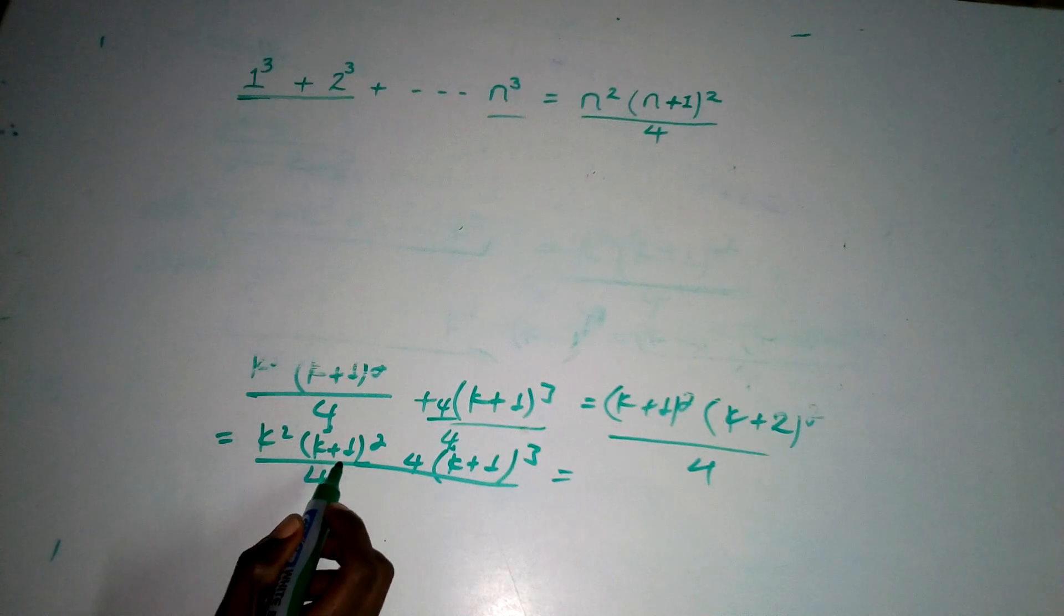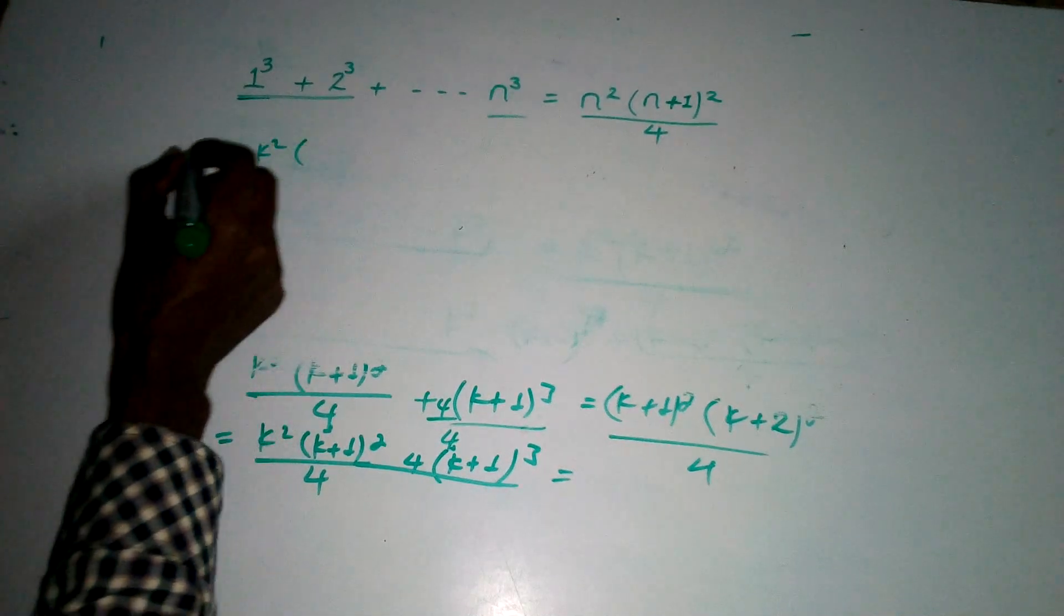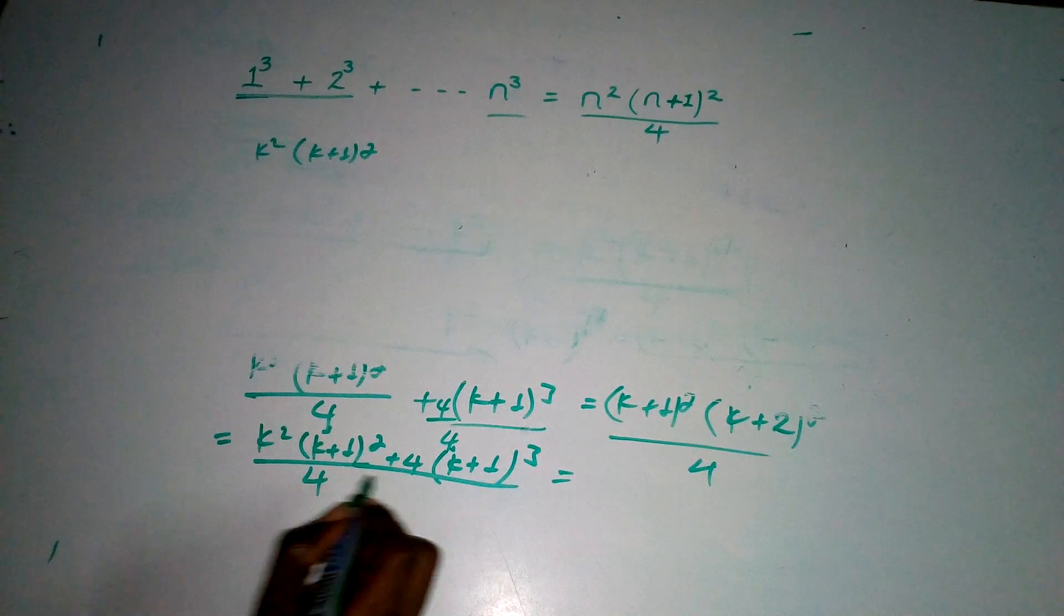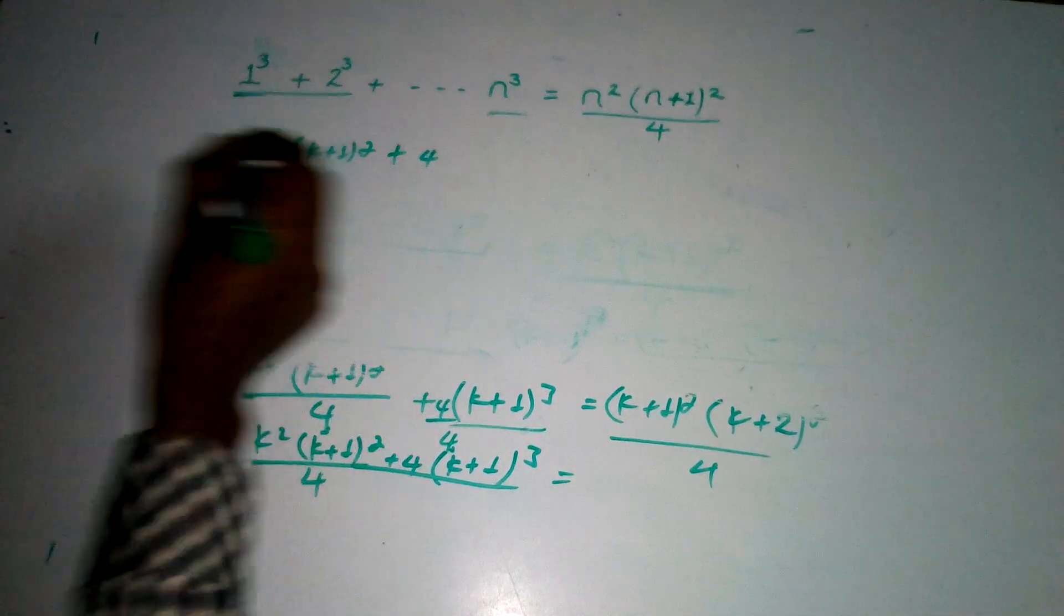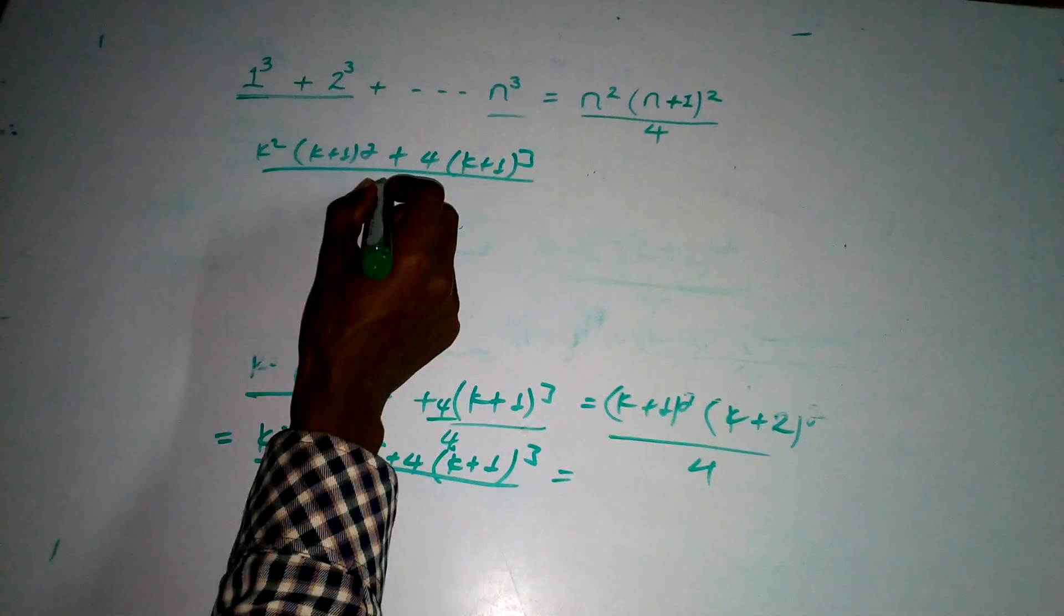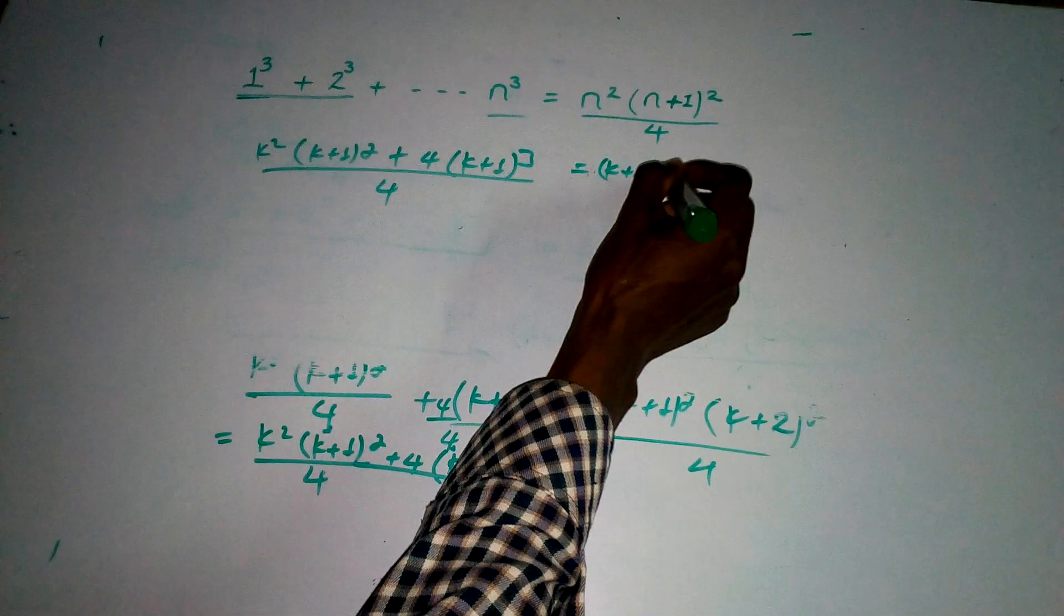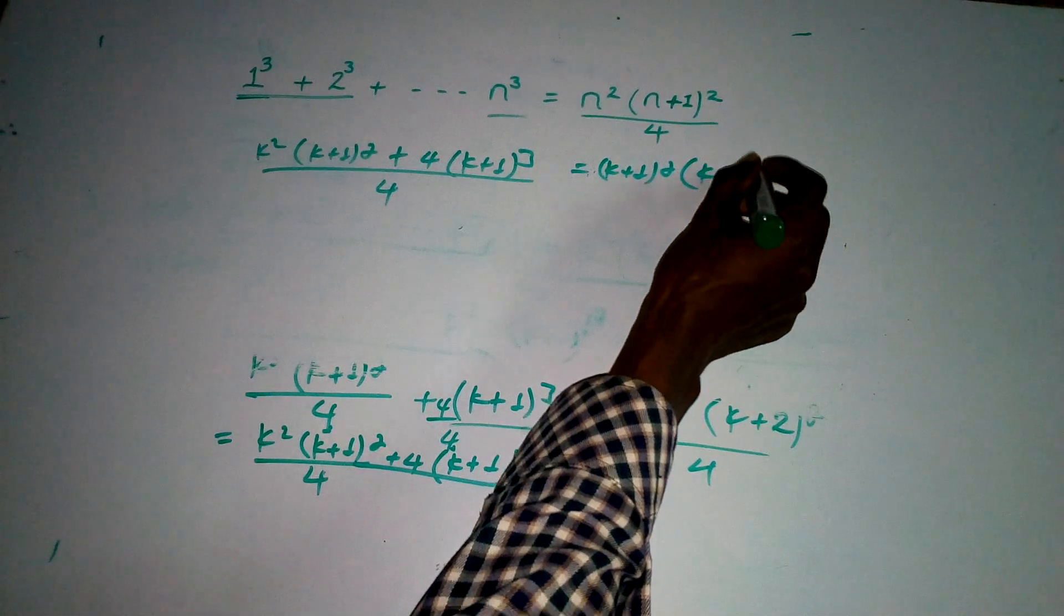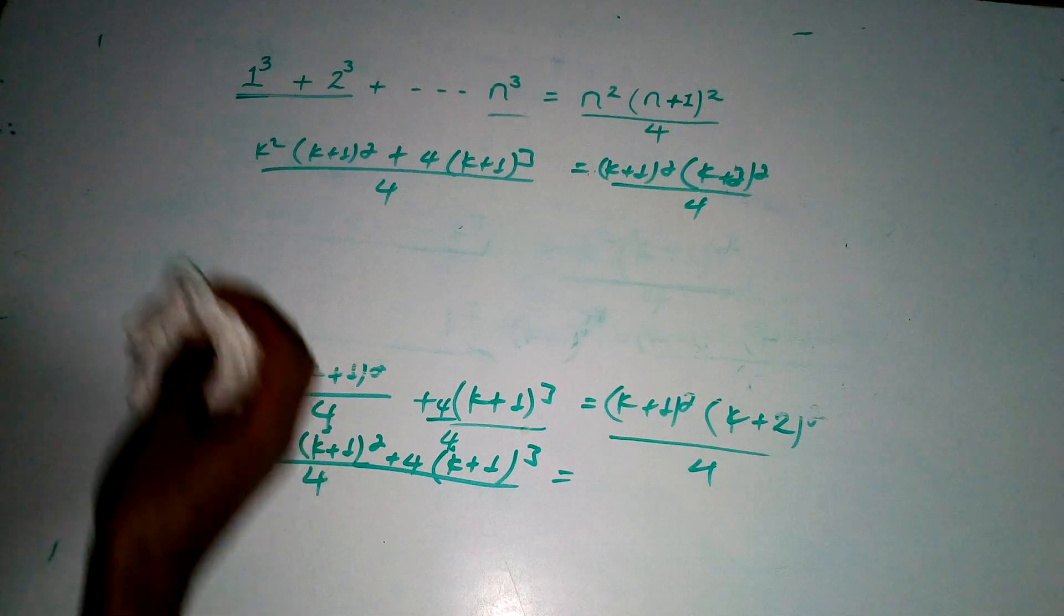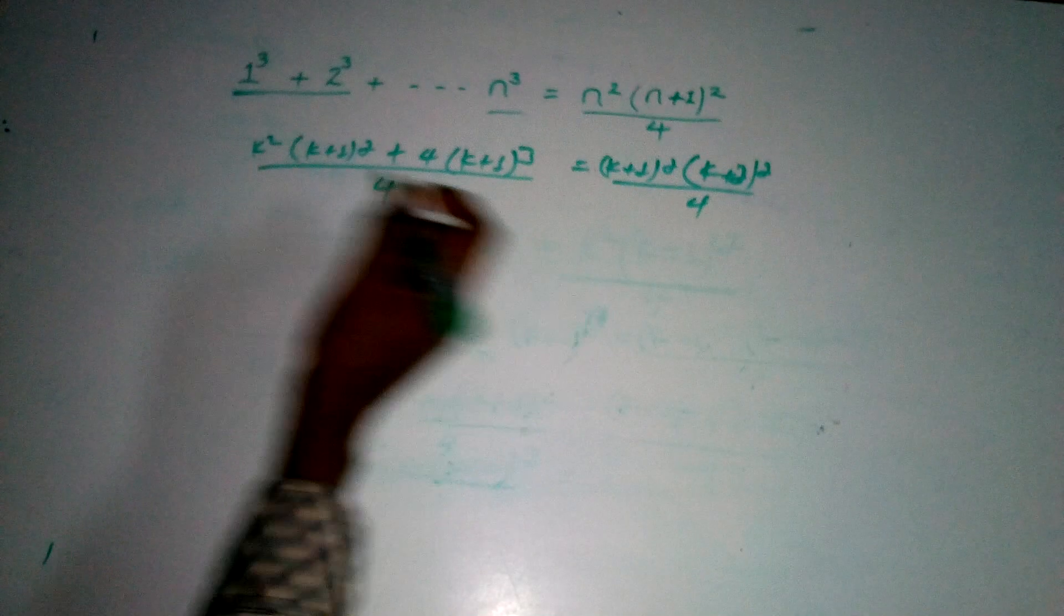This gives us k square in the bracket k plus 1 the whole square plus 4 into k plus 1 the power of 3 over 4.